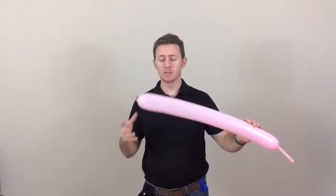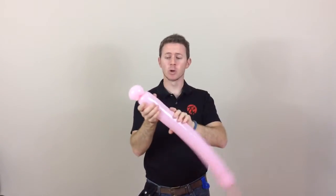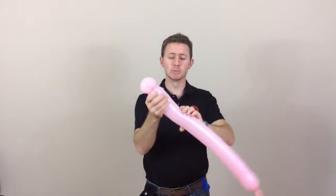So take your first 350 and like most things in life, you're going to start off with a pin twist. Next, we're going to go ahead and we're going to do a loop twist. Loop twist will be about the size of your hand.